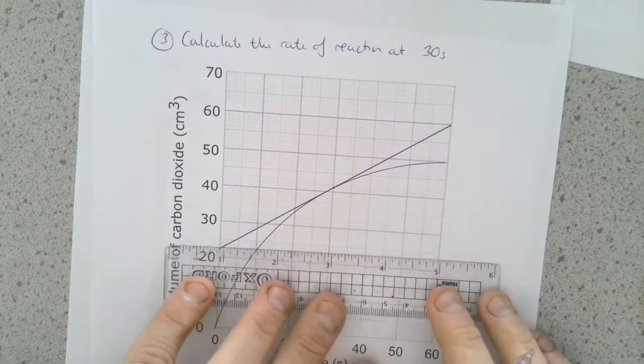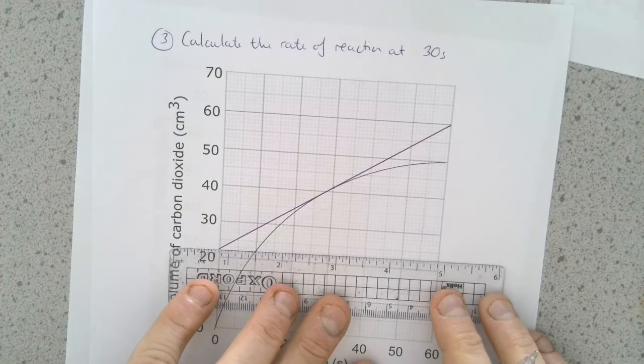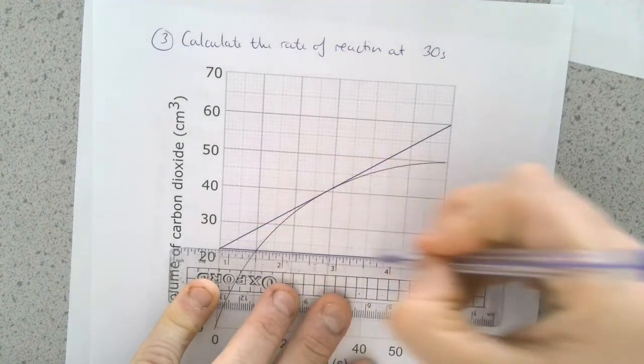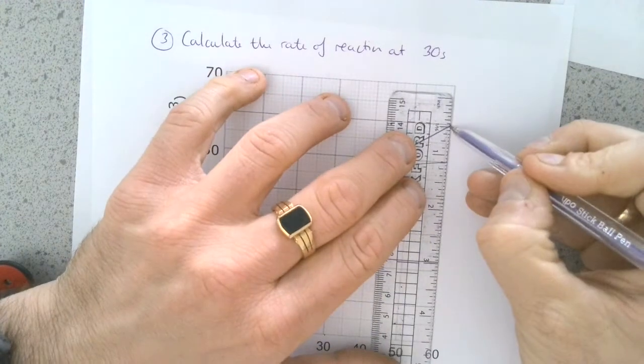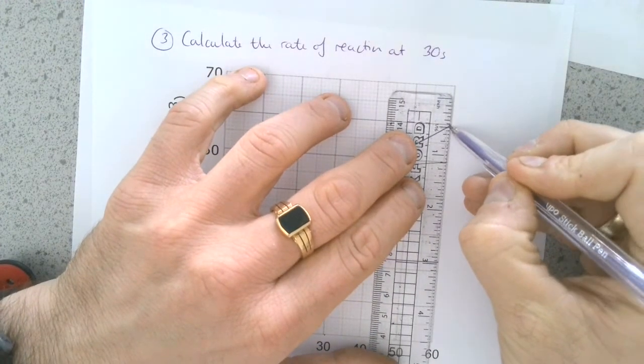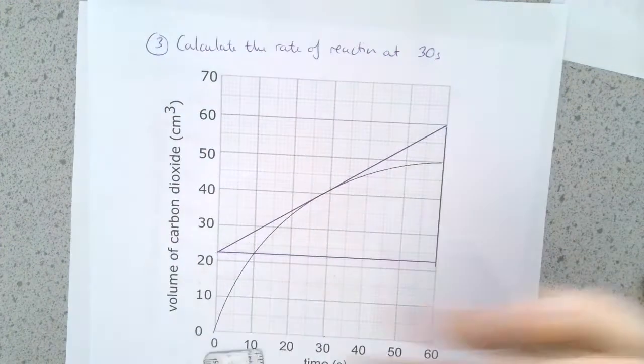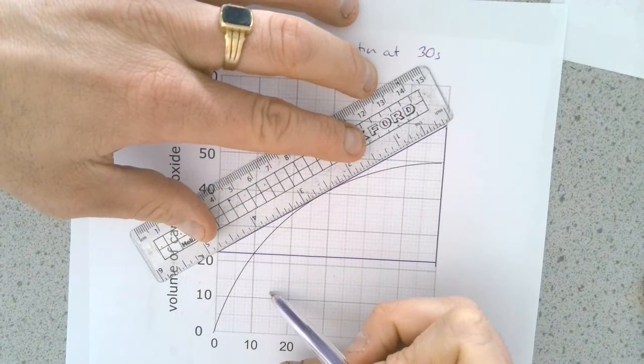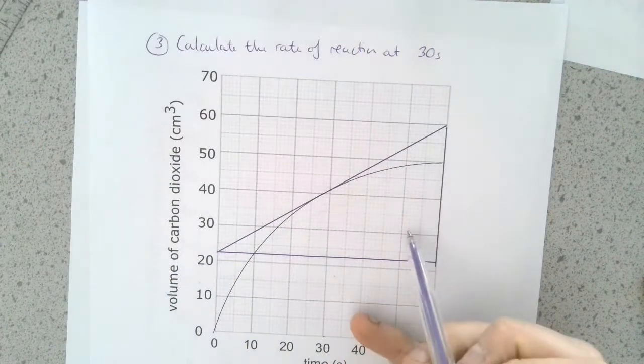So what I then want to do is complete the triangle because I'm going to need to know the distances of these sides like that. And then finally like that. So I've drawn my tangent using a ruler and then completed the sides of the triangle.